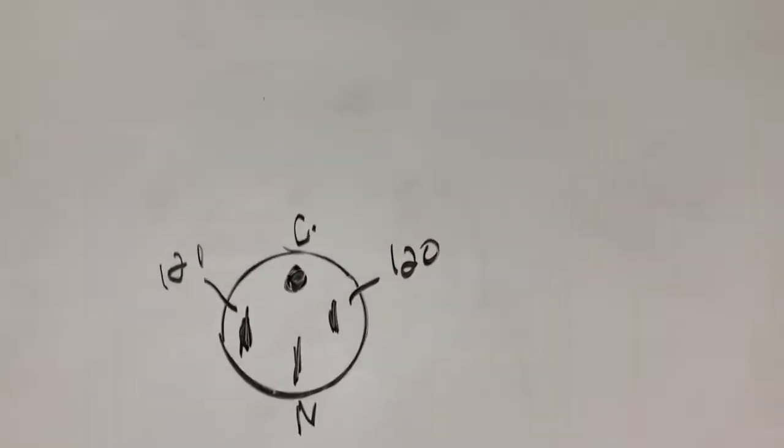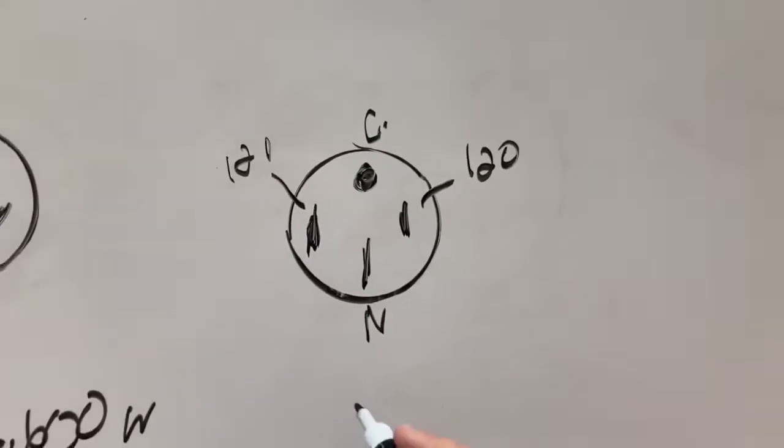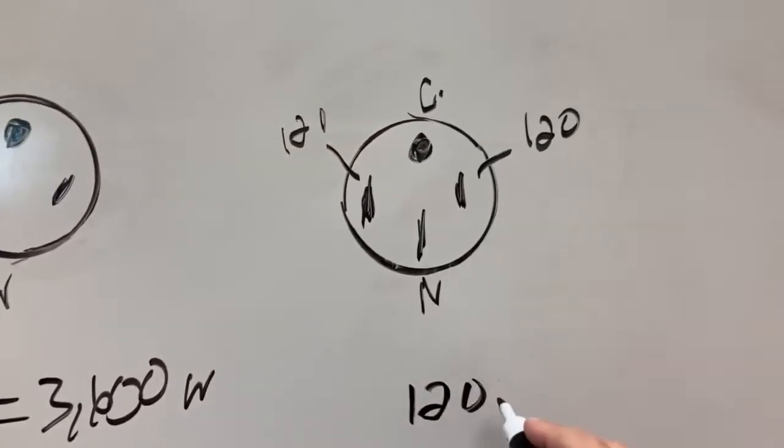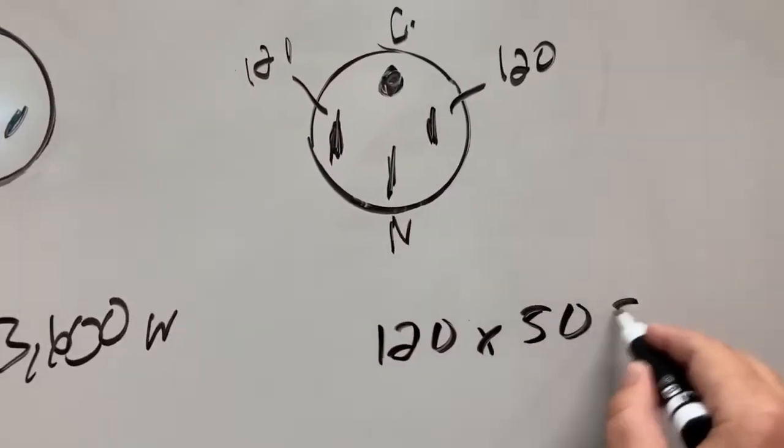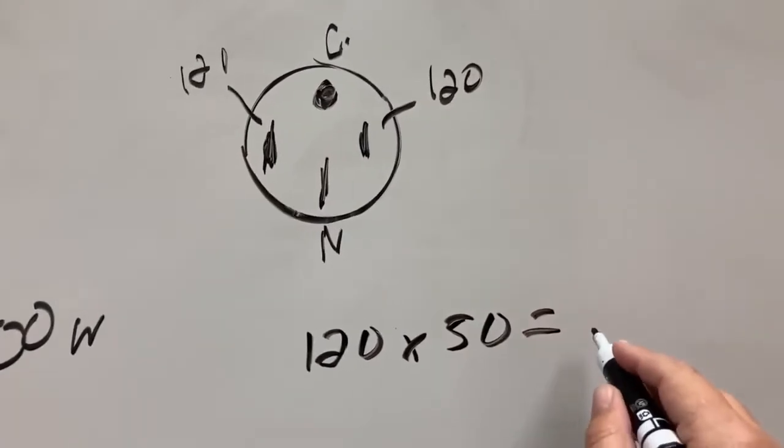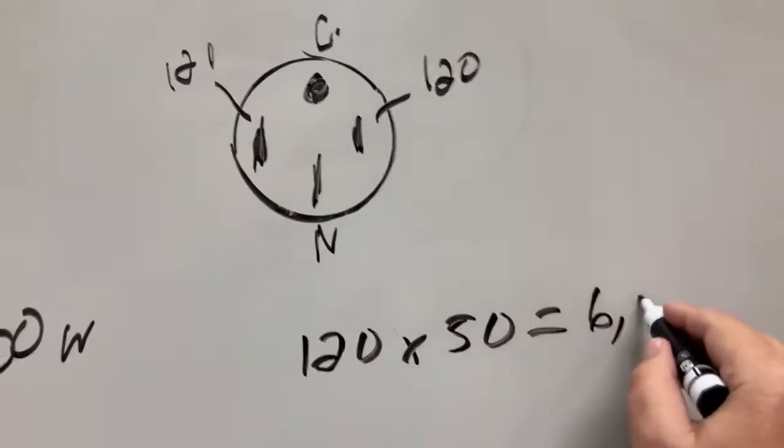Well, with the 50-amp circuit here, if you do the same thing, you get the 120 volts times the 50 amps gives you 6,000.